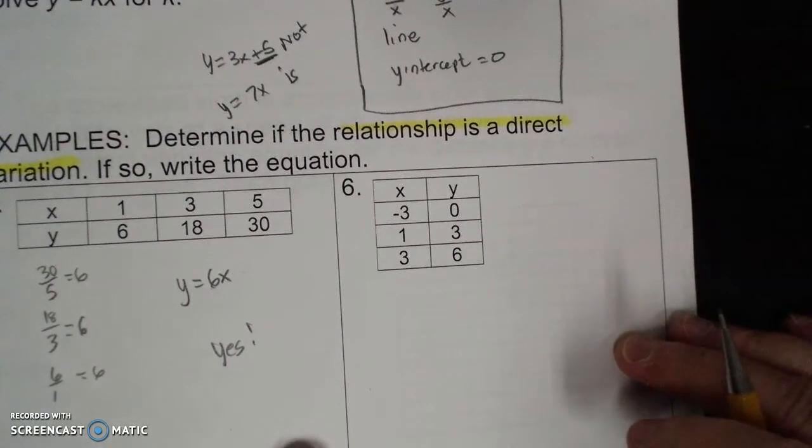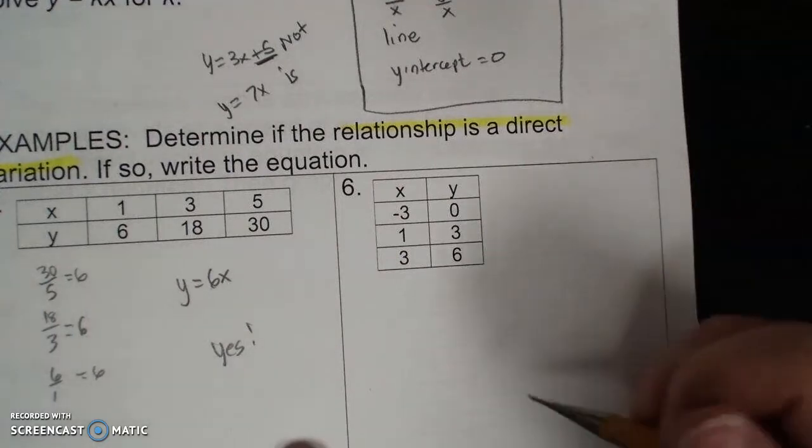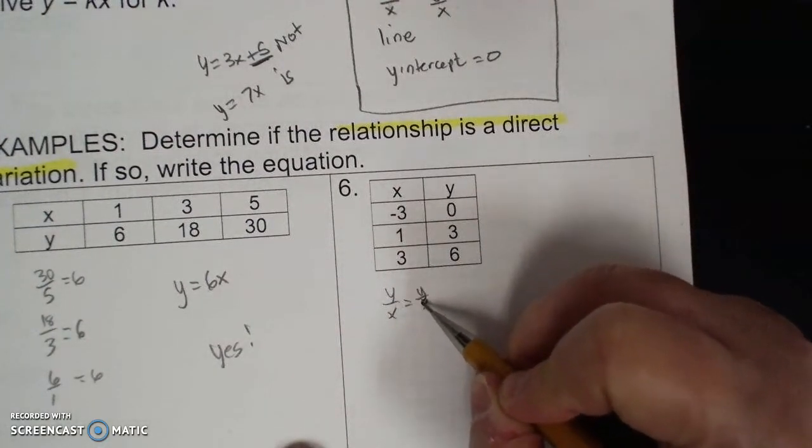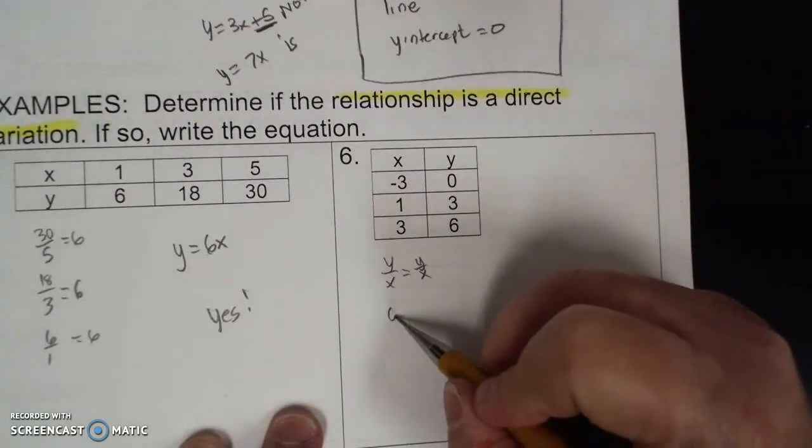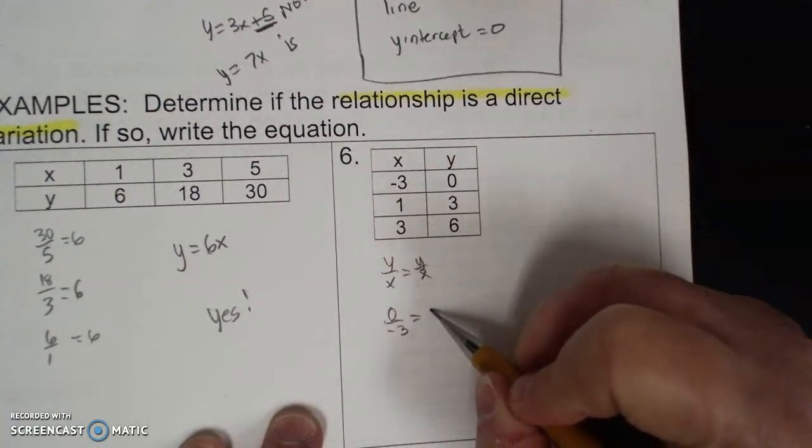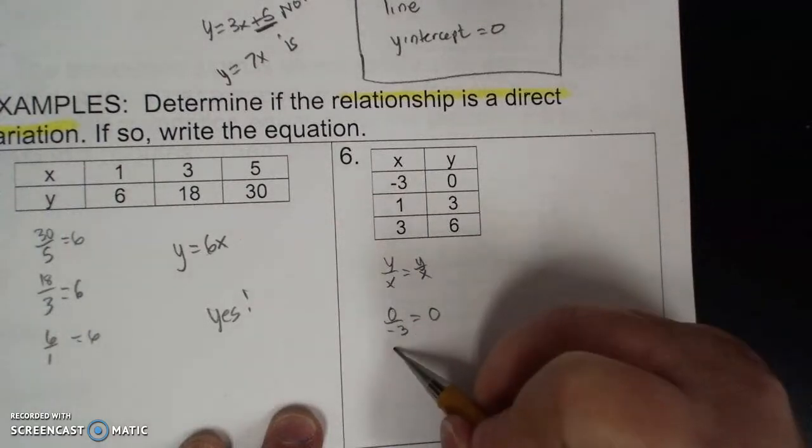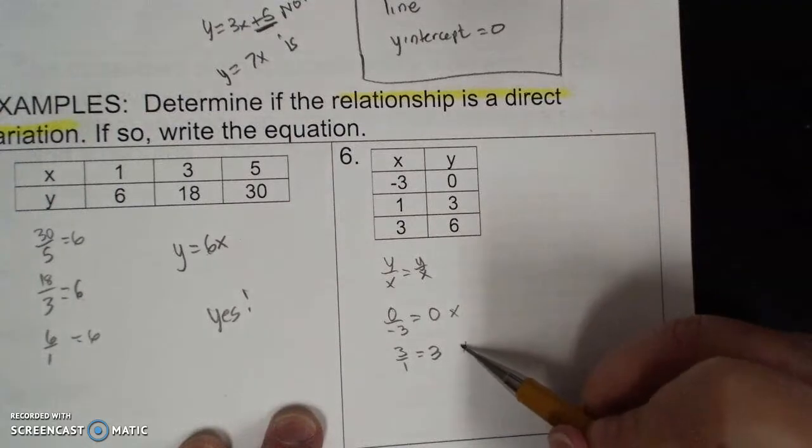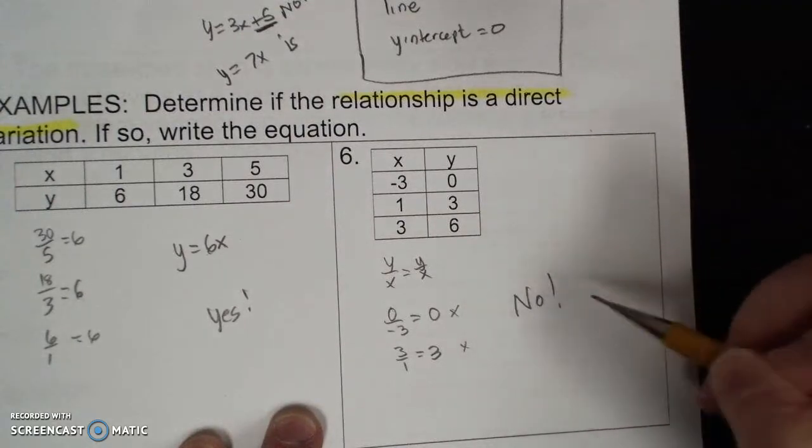So if I do this, I do y over x. This is the easiest one to check. And I go 0 over negative 3, that's 0. And I do 3 over 1, that's 3. These are not matching, so that automatically is a no.